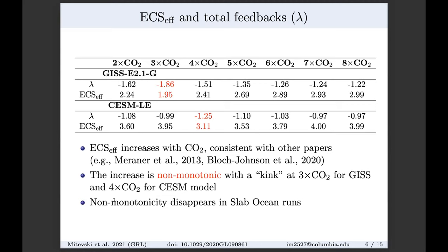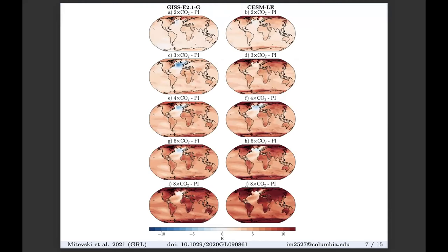Looking at the surface temperature response over the last 50 years of simulation, focusing on the GISS model at 3x CO2, we see an abnormally large North Atlantic warming hole — anomalous cooling that goes away at higher forcings. Similarly in CESM at 4x CO2, there's a large North Atlantic warming hole. Both of these large North Atlantic warming holes coincide with the same kink we saw in ECS.